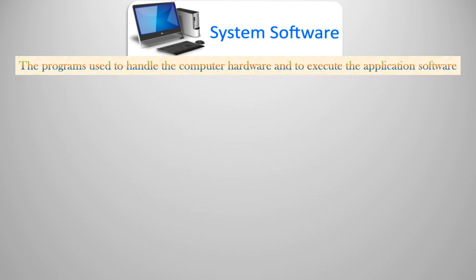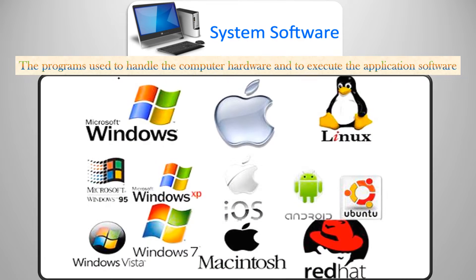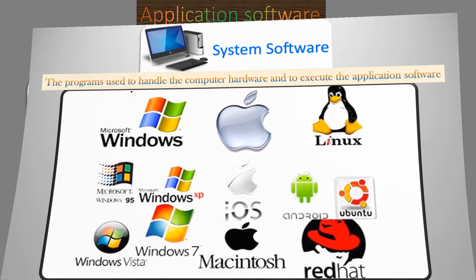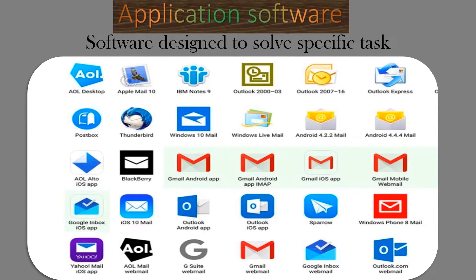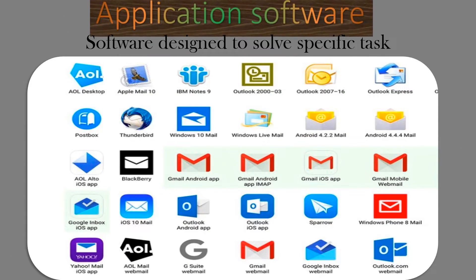System software is the program used to handle the computer hardware and to execute the application software. Application software is software designed to solve specific tasks.